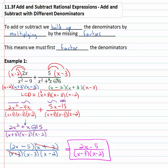We were able to add these rational expressions together by identifying the common denominator and building up by multiplying by missing factors. Let's try a subtraction problem.